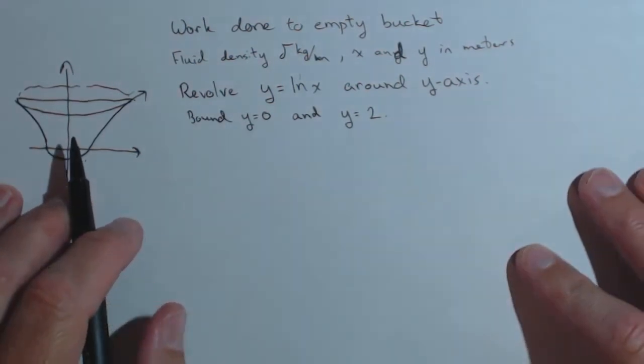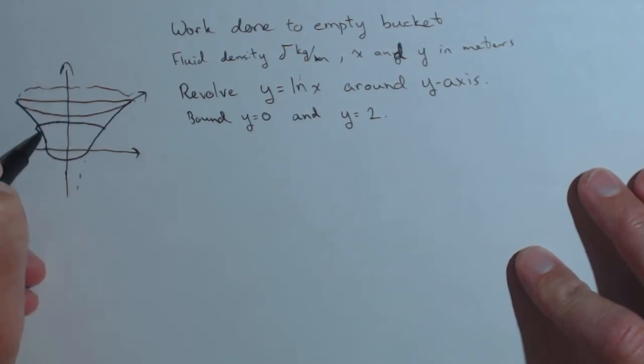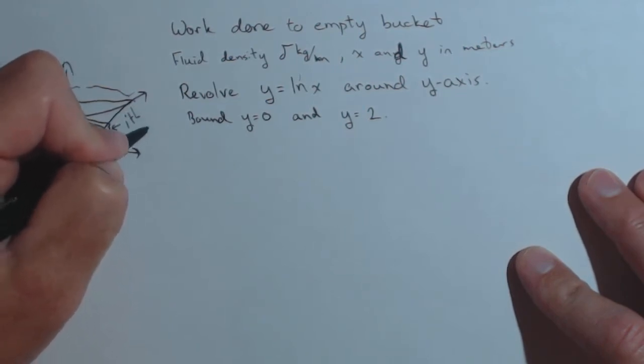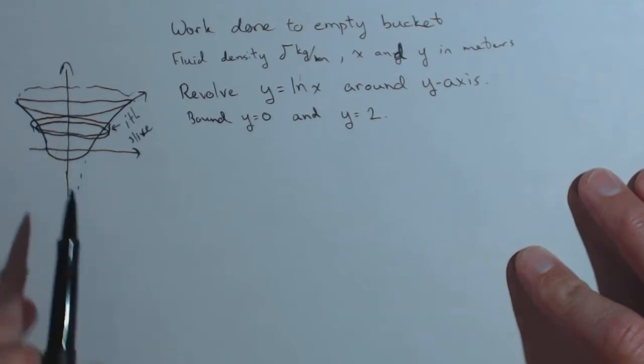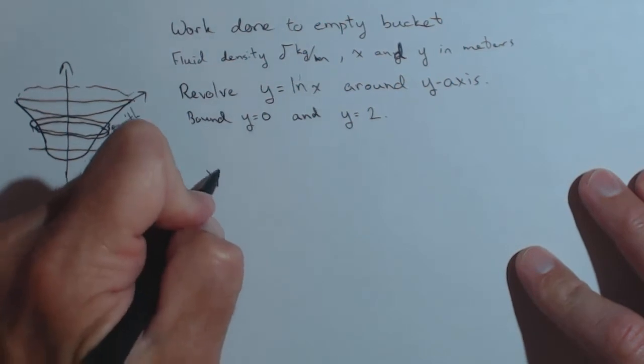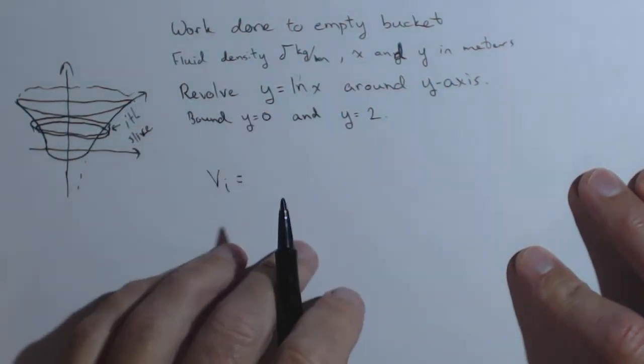Now, we're going to look at the work done to empty this bucket. We're not going to do anything different than we've done before. We are going to take a slice. Right there is my i-th slice. We want to look at the work done to move that i-th slice. But before we do that, let's start with the volume of the i-th slice.